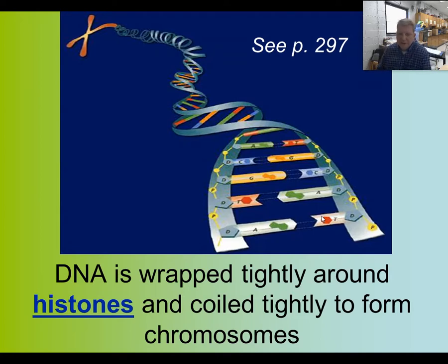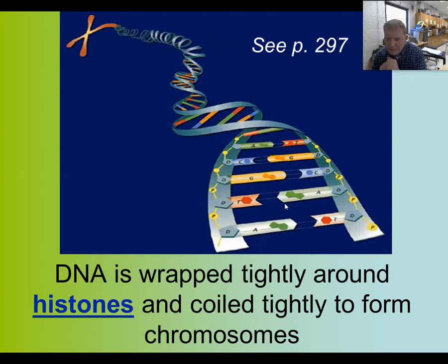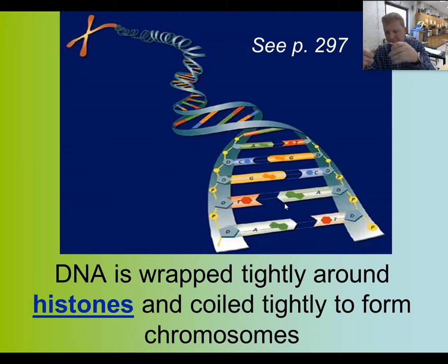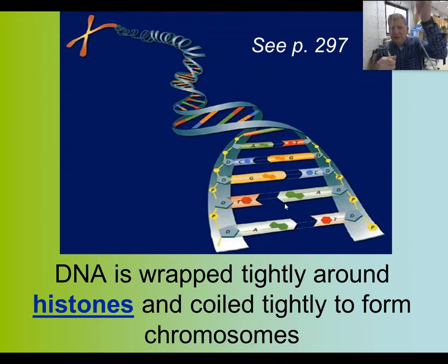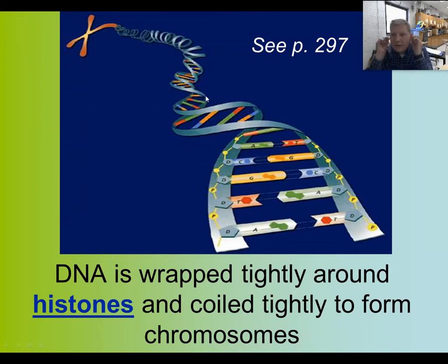DNA is wrapped tightly around histones and coiled tightly to form chromosomes. There are six feet of DNA in each of your body cells, and in order to organize it so it doesn't get tangled, it wraps around histones — twice around each histone — forming a more compact structure. It's similar to how wrapping your earbud cord around something prevents it from getting tangled.